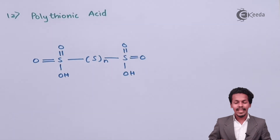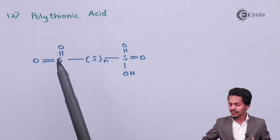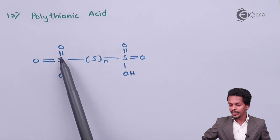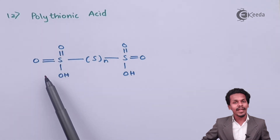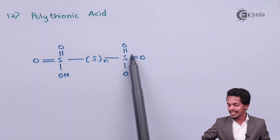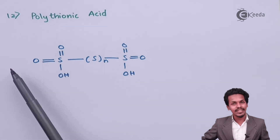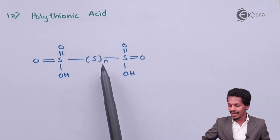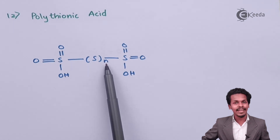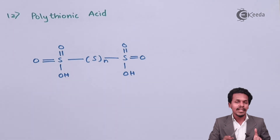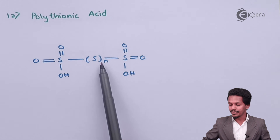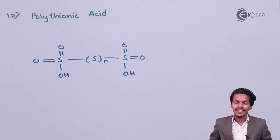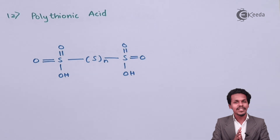The last one is polythionic acid. Here, sulfur is attached to two oxygen atoms via double bonds, one valency is satisfied by OH, and the two terminal groups are connected via a chain of sulfur atoms — represented as 'n' — meaning multiple sulfur atoms can be attached. This concludes the discussion on oxoacids of sulfur.